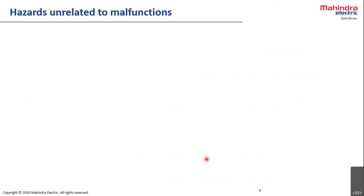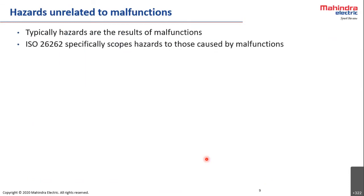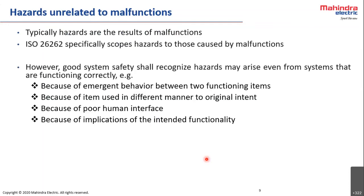An important and interesting topic is hazards unrelated to malfunctions. Based on our project experience, while hazards are normally results of malfunctions — ISO scopes functional safety as absence of unreasonable risk due to malfunction behavior of EE systems — we have seen that hazards may also arise even if the systems are working correctly. As a system safety responsible, you have to also consider these scenarios in your hazard analysis.